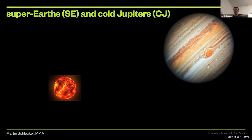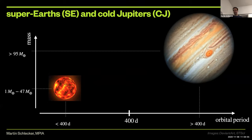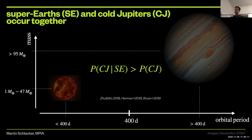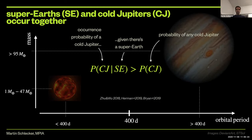It's best to define these types of planets in mass-period space, where there is no universal consensus of what makes a super-Earth and what is a cold Jupiter. We adopted these limits from observational studies that reported a very interesting trend. They counted the numbers of systems that had either only one of these planet types or both, and found that cold Jupiters are enhanced in occurrence in systems that also have a super-Earth. Mathematically, the conditional probability of having a cold Jupiter, given that there's a super-Earth in the system, is higher than the probability of finding a cold Jupiter in any random system.